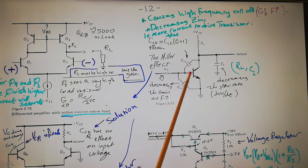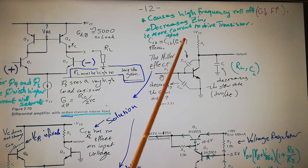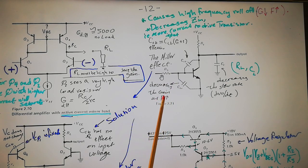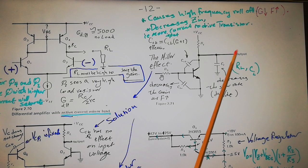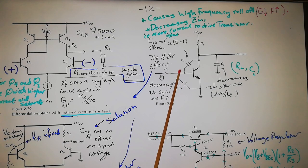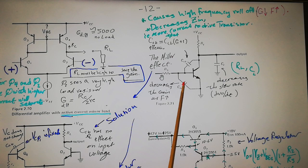We've explained why the Miller effect happens. You also have Cbe — the cap between the base and the emitter — which decreases gain as frequency goes up, the same as Ccb but not as deadly. It's connected between the base and ground, and at higher frequencies it increasingly shorts the base to ground. That's what the cap between the base and emitter does.